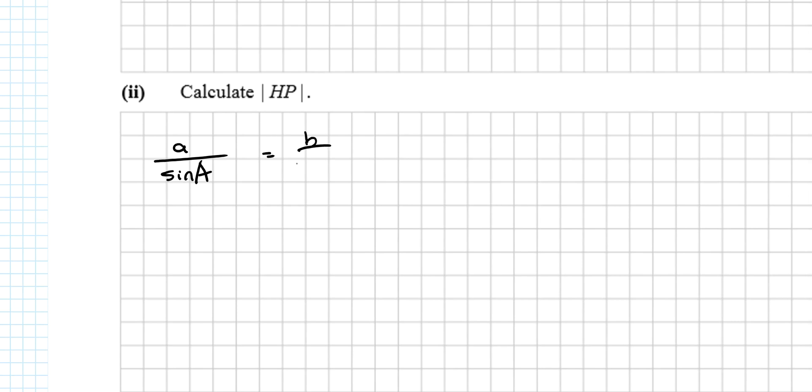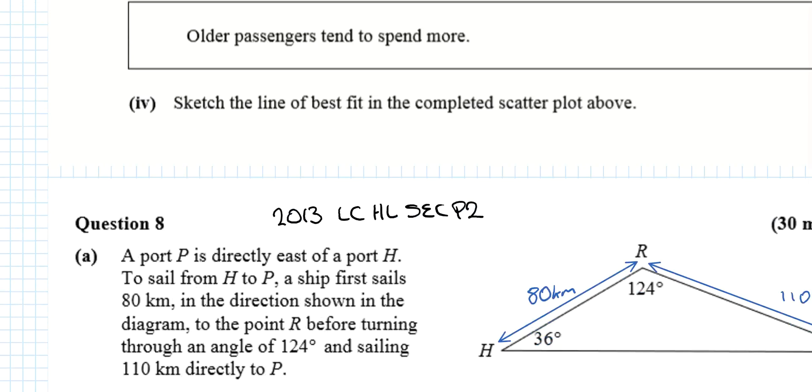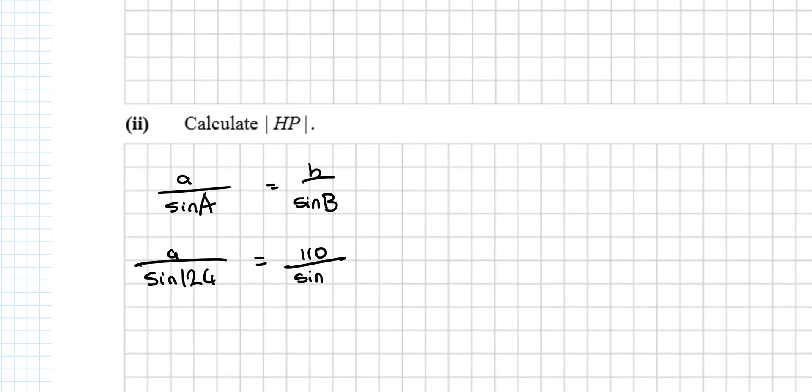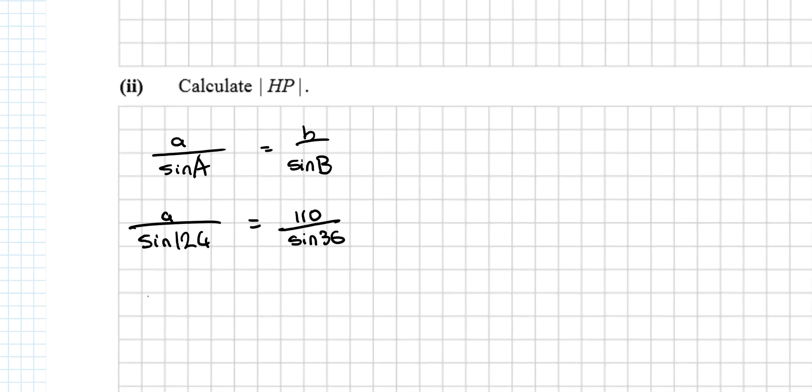Equals b, which is 110 over sine 36. So a equals sine 124 times 110 over sine 36.